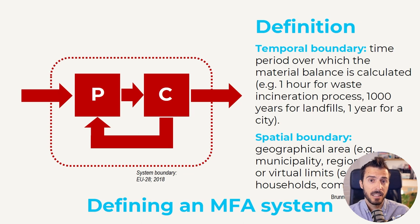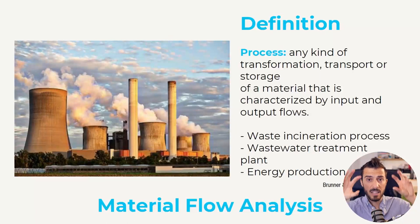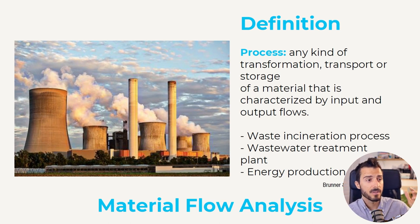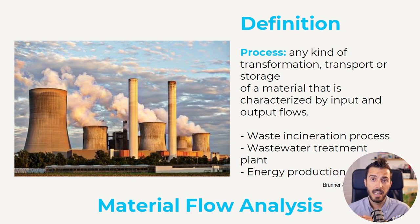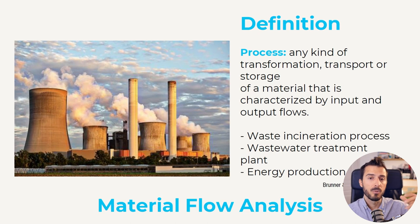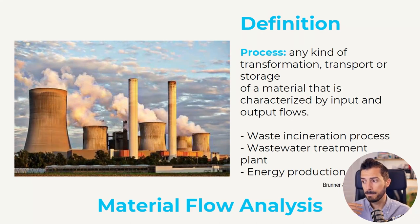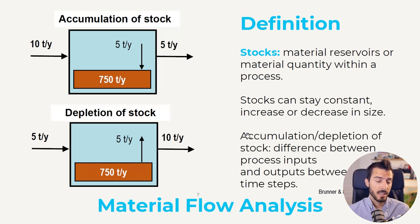Now let's define what a process is. In the previous graph, the boxes represented production and consumption. A process is a transformation or storage of a flow from one state to another. For instance, a wastewater treatment plant receives wastewater, extracts phosphorus and nitrogen, and releases it back to a stream. Similarly, a waste incineration process receives municipal solid waste, burns it, produces vapor that transforms into electricity, and generates ashes and other downgraded materials that go to landfill.